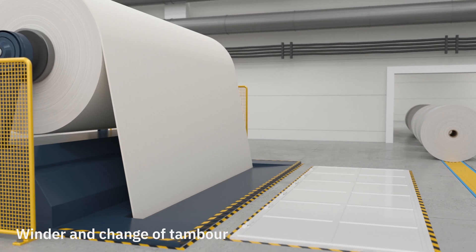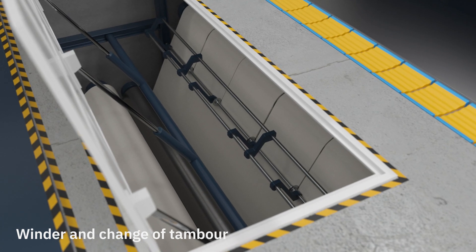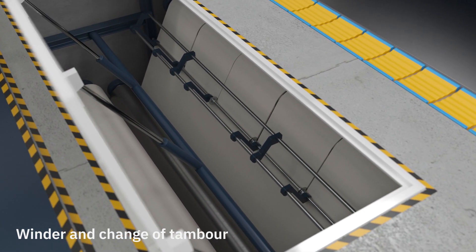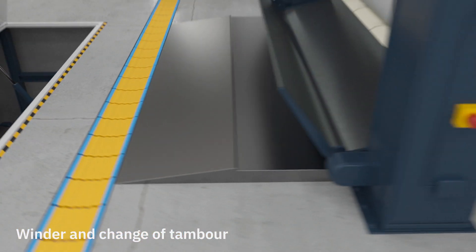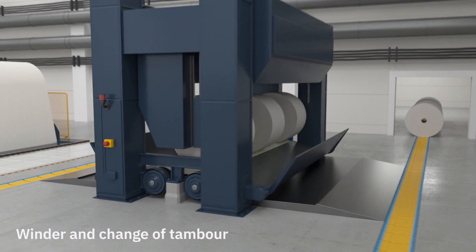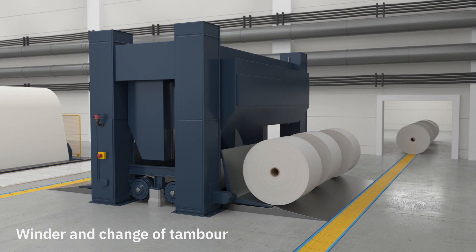The last step is the winder, where the jumbo reel is cut into smaller reels. The reels are cut into customer specifications in respect of diameter, width per reel and the number of reels or tons. After wrapping, the reels are ready to be sent to customers around the world.